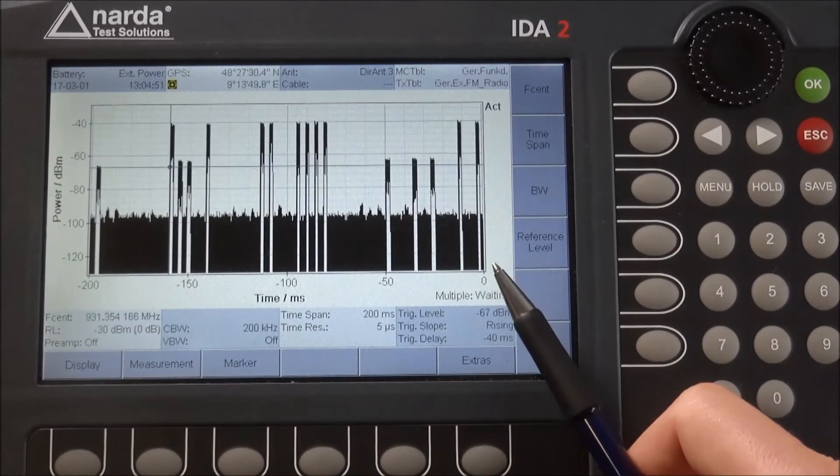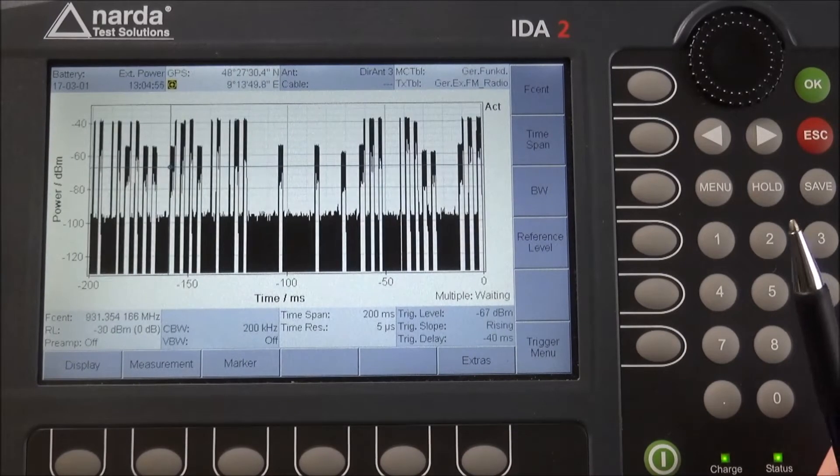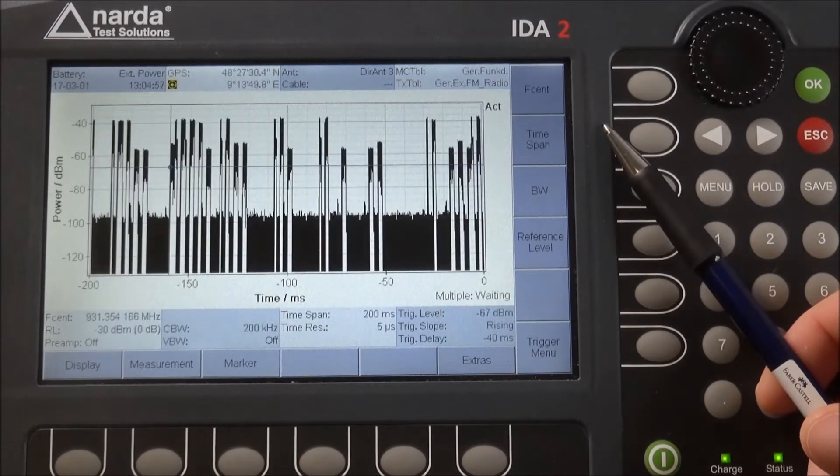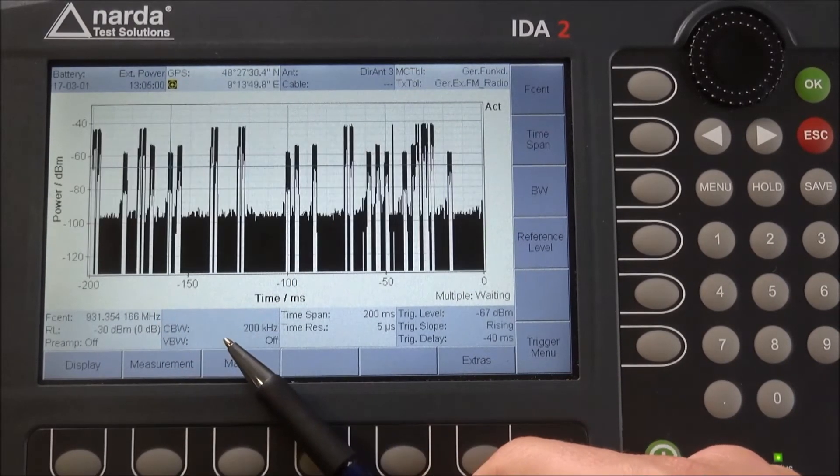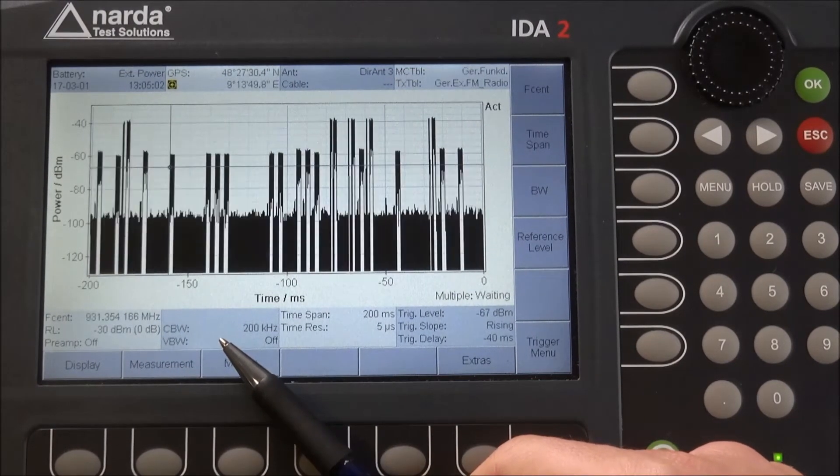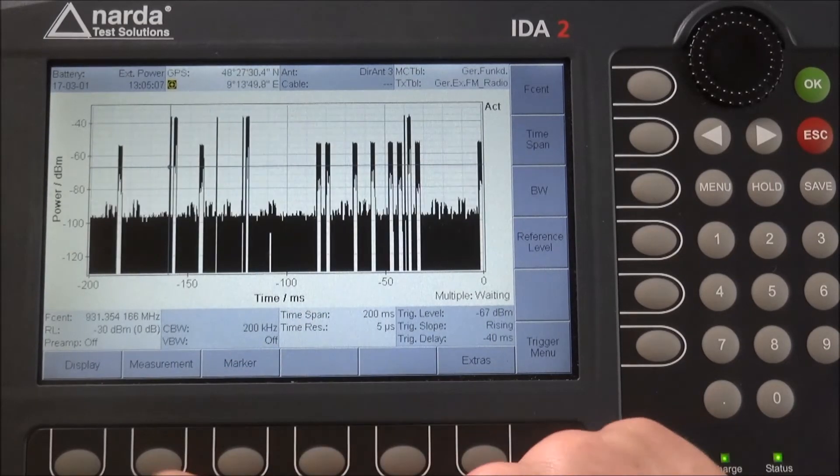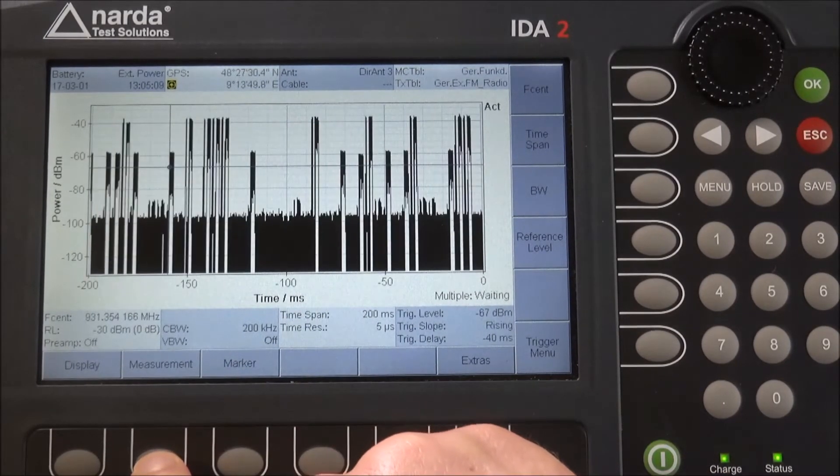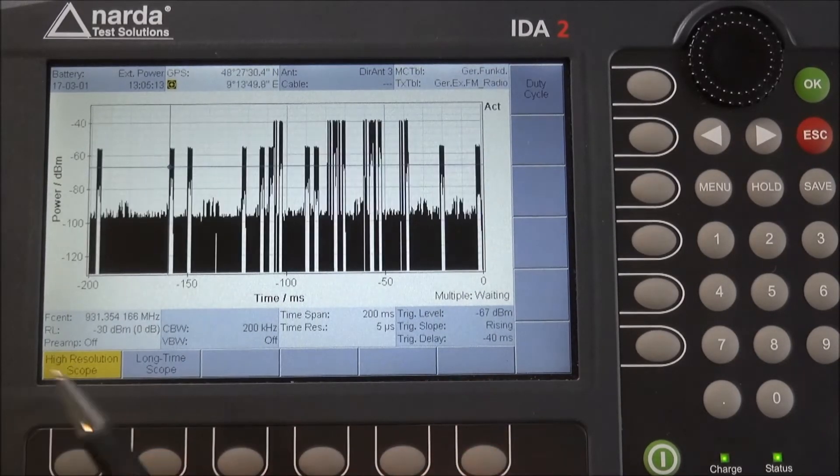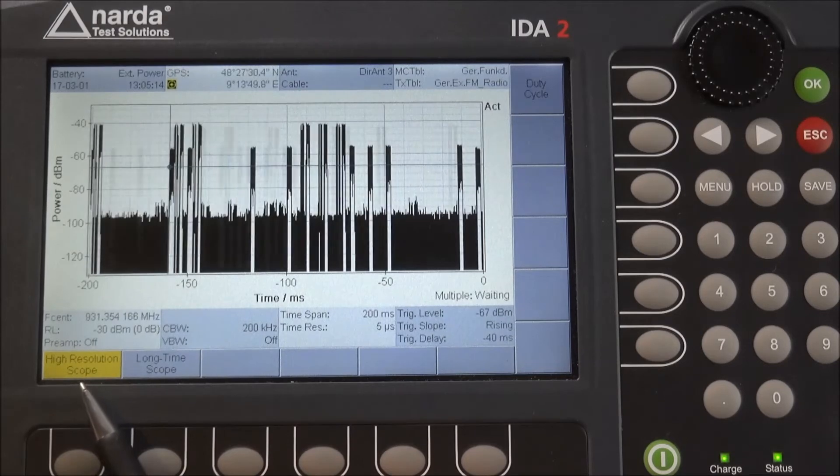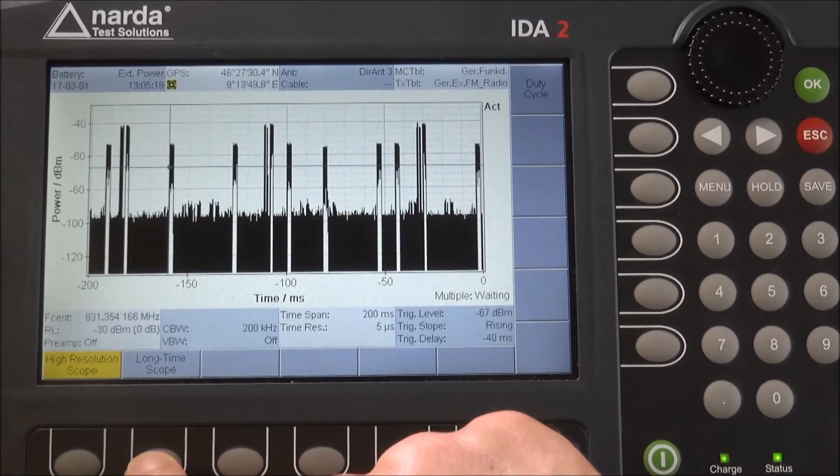There are some limitations with regards to time span that are influenced by the channel bandwidth and by the internal memory of the IDA. For that purpose, there is a sub mode when you click on the measurement at the bottom. This is the high resolution scope, but there is also the long time scope that allows you to record and watch signals for up to 24 hours.